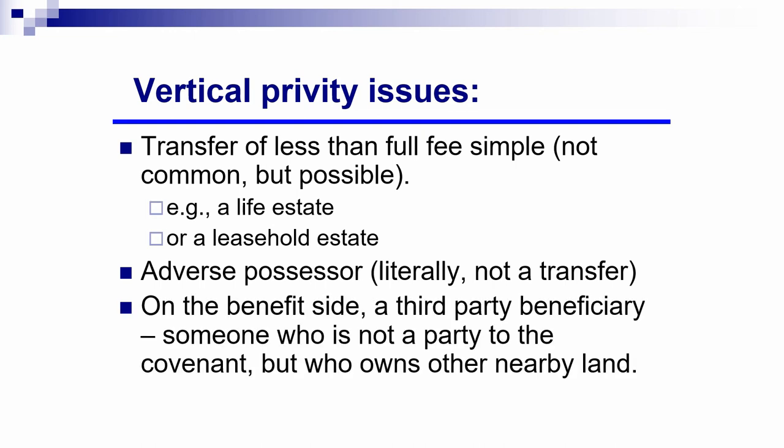A third situation, on the benefit side, is a third-party beneficiary — where the original covenant says it's not only for the benefit of the party entering into it as benefited owner, but also for the benefit of somebody else who owns other nearby land. Obviously it's possible to name a third-party beneficiary, but from that party's point of view there's no vertical privity, because there's no transfer of any interest in the land to them at all. In all three of these situations, it's possible to argue there is no vertical privity, and therefore the covenant won't run with the land.